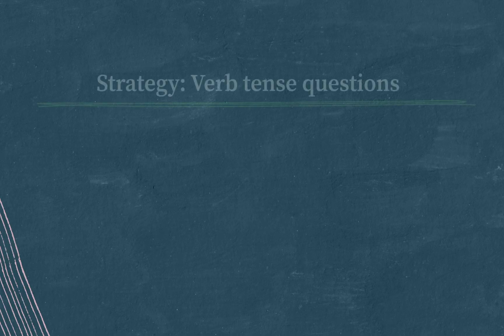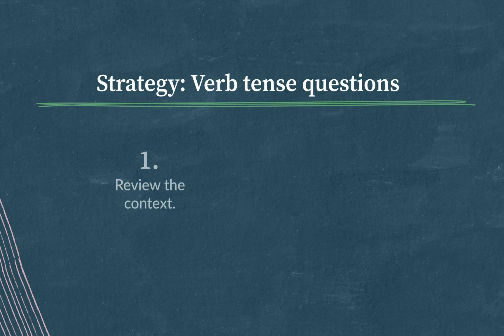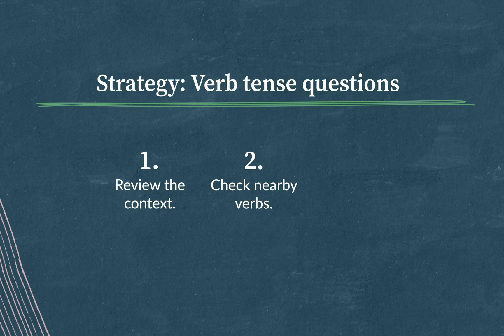Here's my strategy. Once I realize that this question is asking me about verb tense, first I review the context to make sure I understand what's going on — is the sentence in the present or the past tense? Second, I check the other nearby verbs to consider if a verb tense shift makes sense or not — it usually doesn't. And finally, I match that tense in a logical way. Good luck out there — you've got this.